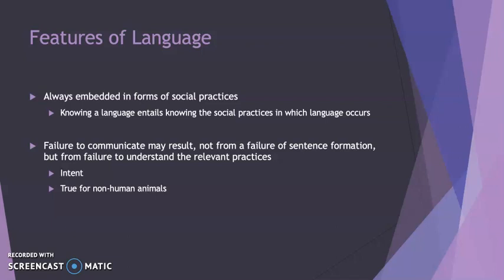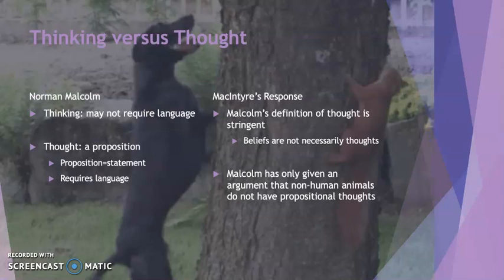Part of what that means is that our language is always embedded in forms of social practices, so how we relate to each other through our actions gives language specific meanings. Knowing a language entails knowing the social practices in which the language occurs. We might look at a guidebook when touring Italy and be able to ask where the restroom is, but that doesn't give us all the social practices involved. A failure to communicate may result not from a failure of sentence formation but from a failure to understand the relevant practices.